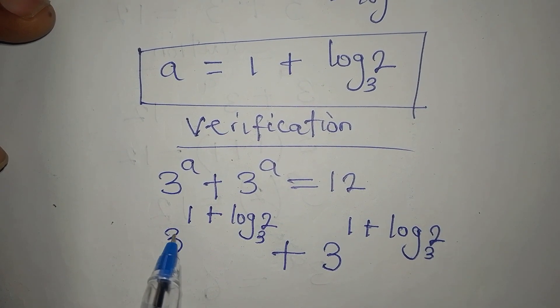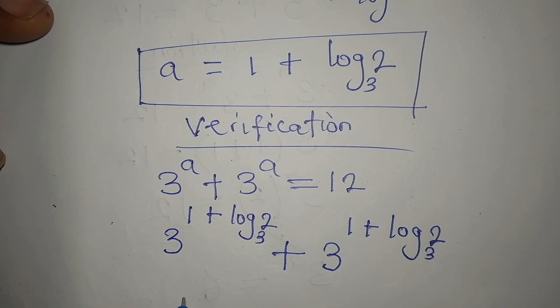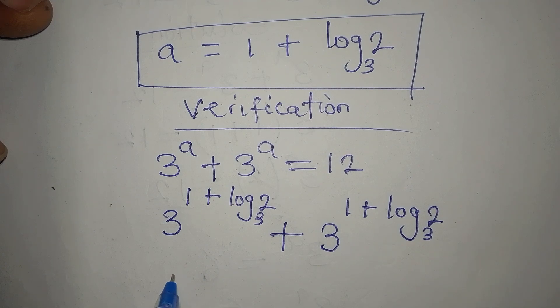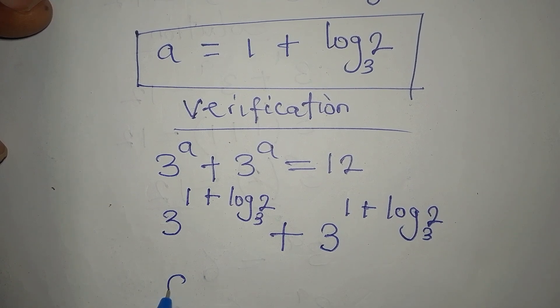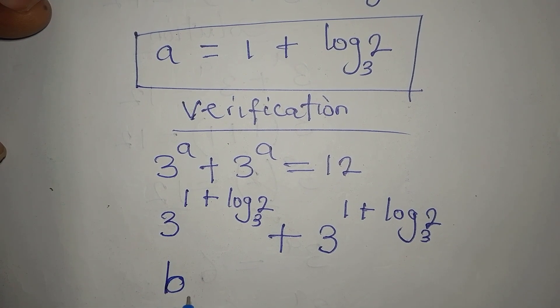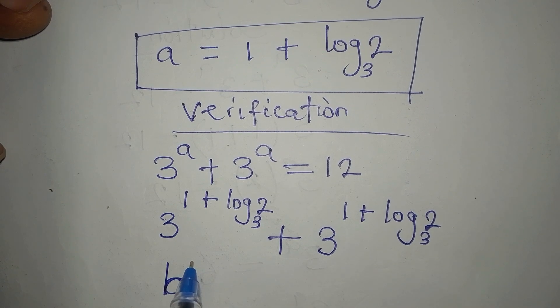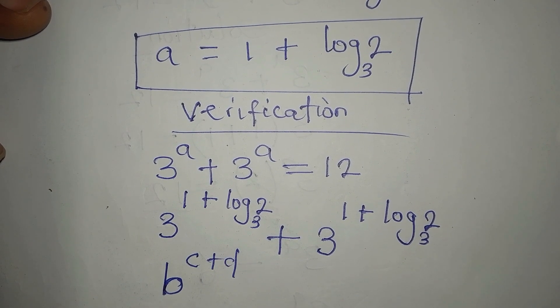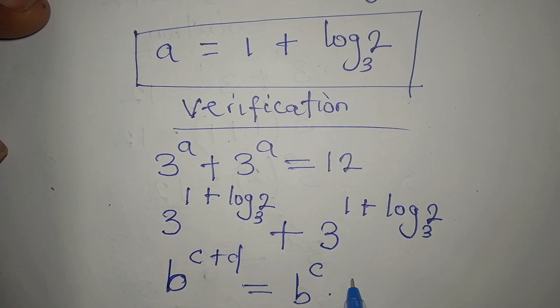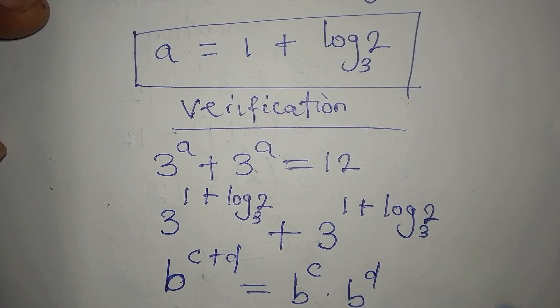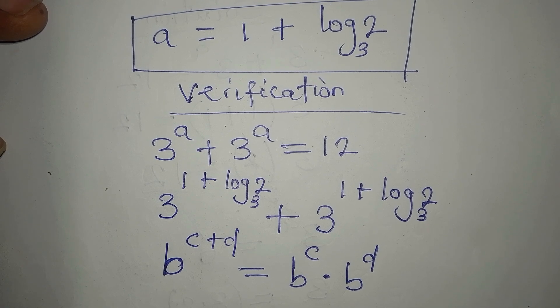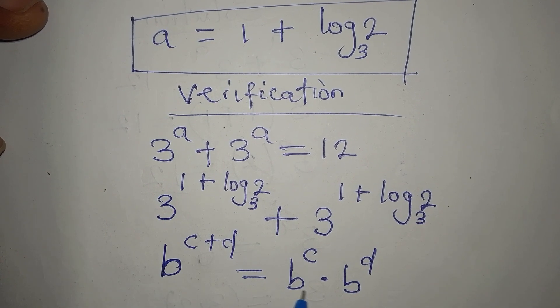Now, before I expand this, let's talk about this law of indices. We have, if we have b to the power of c plus d. Okay. Now this is the same thing as b to the power of c times b to the power of d. Okay, one of the laws of indices. So I'm going to express this to be in this form.